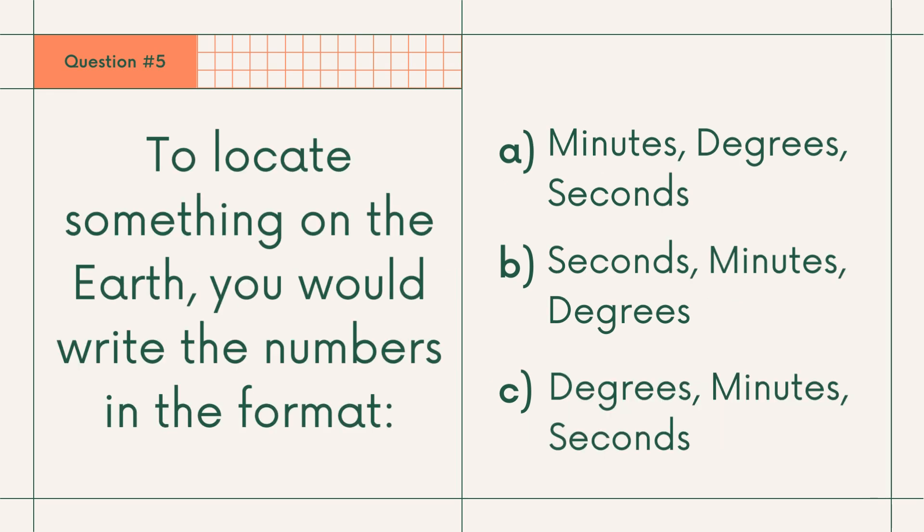Question number 5: To locate something on the earth, you would write the numbers in the format A. Minutes, degrees, B. Degrees, seconds, or C. Degrees, minutes and seconds. Answer: C. Degrees, minutes and seconds.